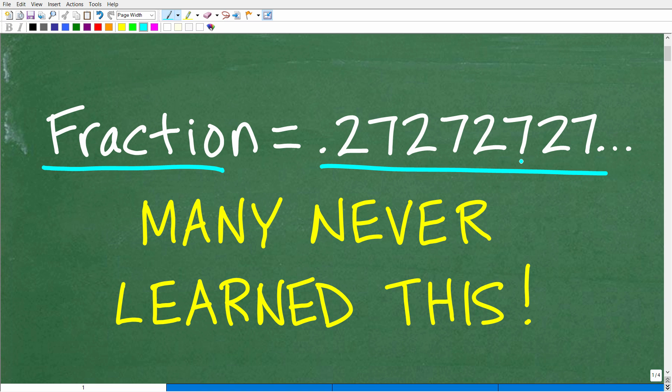So what we have here is a repeating decimal. The digits 27 are repeating, so we could write this as 0.27 repeating. This is a very important topic when it comes to fractions and decimals. All repeating decimals can be expressed as a fraction.